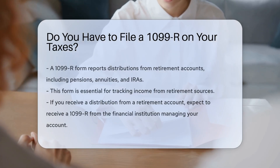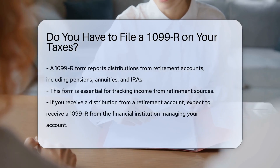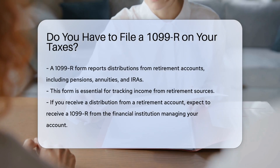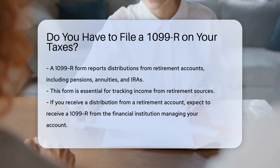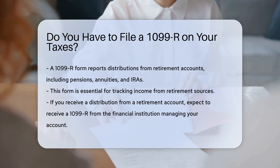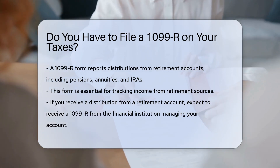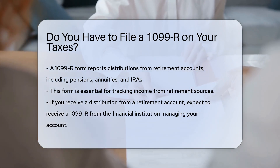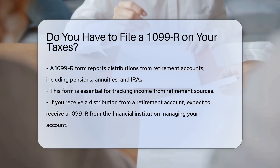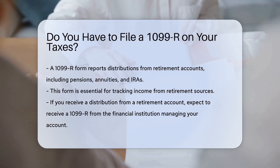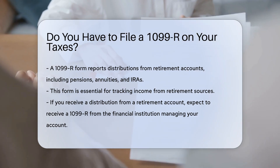A 1099-R form reports distributions from retirement accounts. This includes pensions, annuities, and IRAs. It is essential for tracking income from these sources.